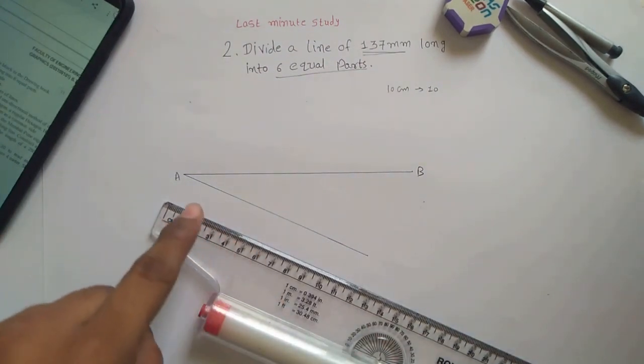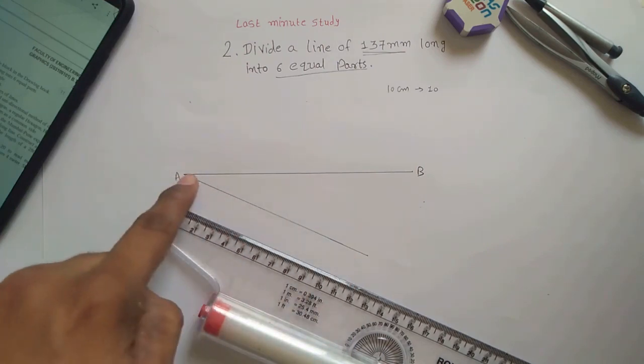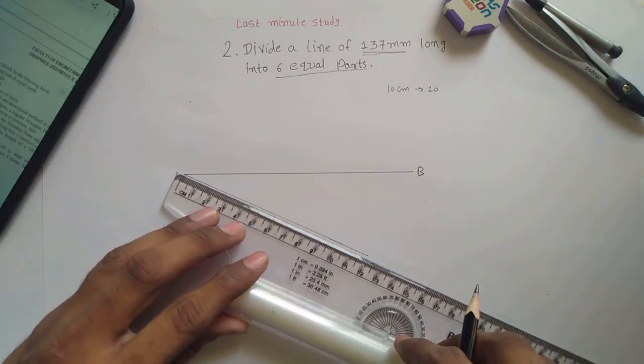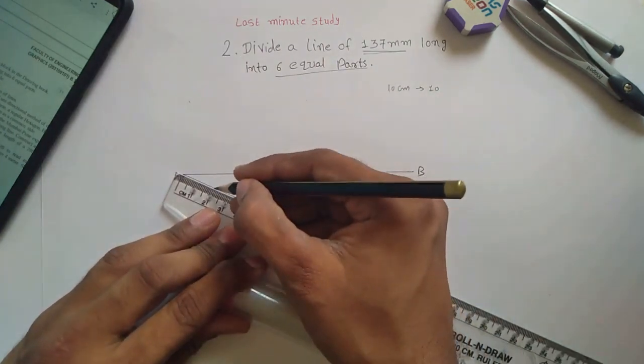Now you have to divide this line into 6 equal parts. Now it's easy because the length of this line is 120 mm. So you have to divide this line into 6 equal parts which is easy.